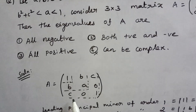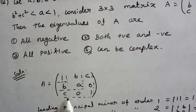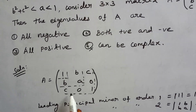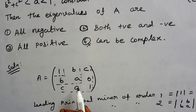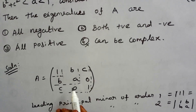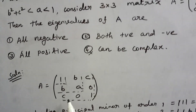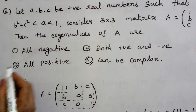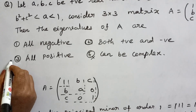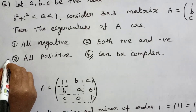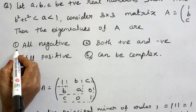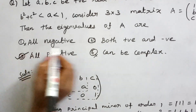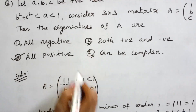Since all three leading principal minors are positive, the given matrix is a positive definite matrix. For a positive definite matrix, all eigenvalues are positive. Therefore, option 3 — all positive eigenvalues — is correct. The other 3 options are wrong.